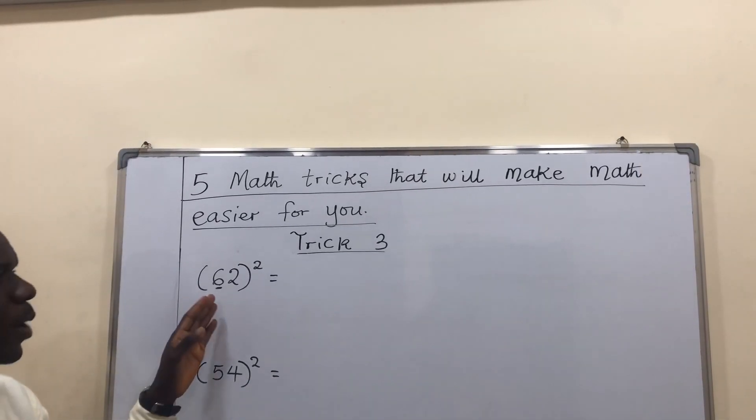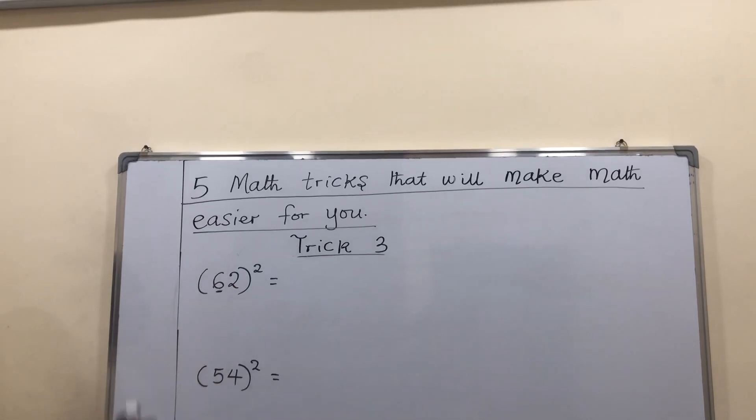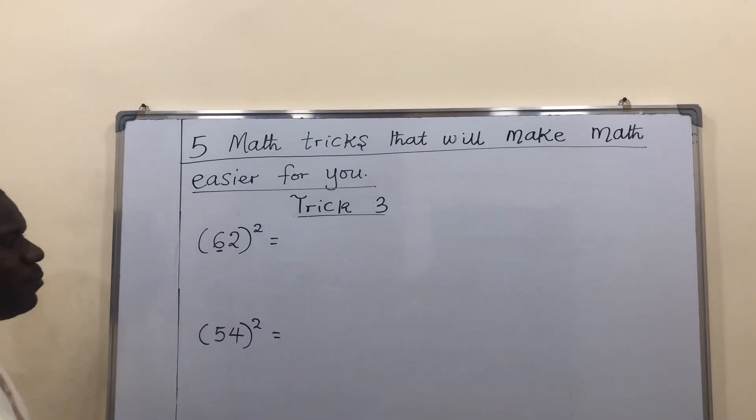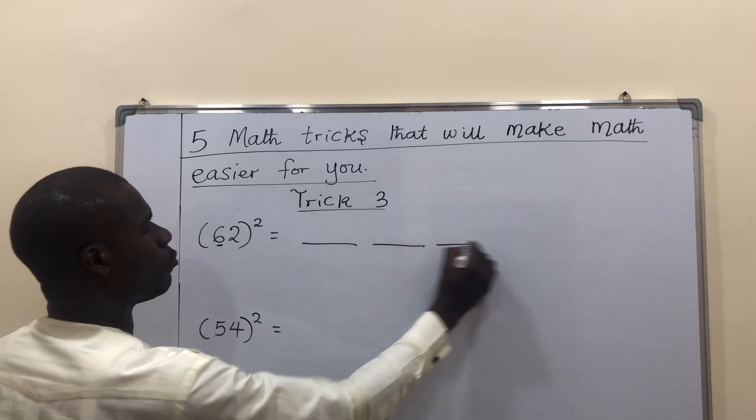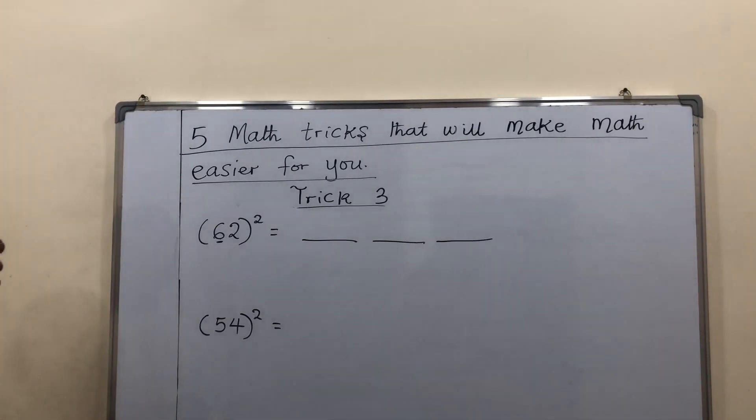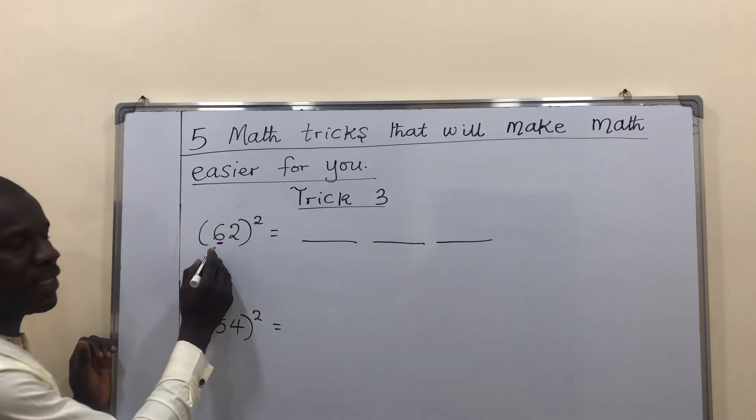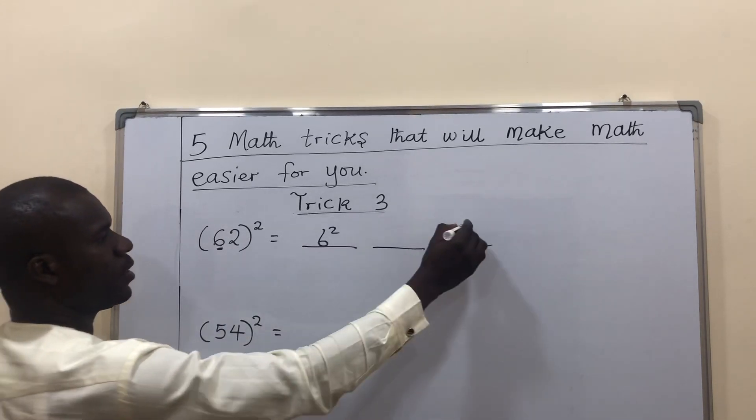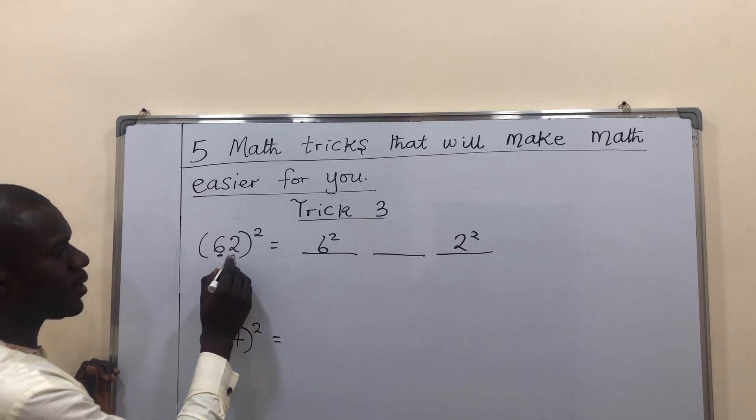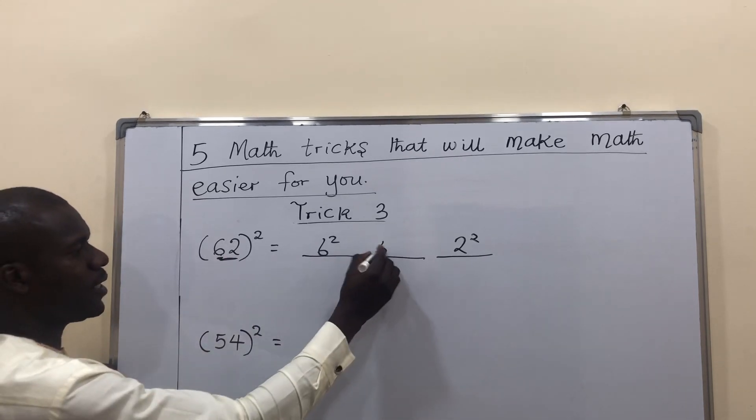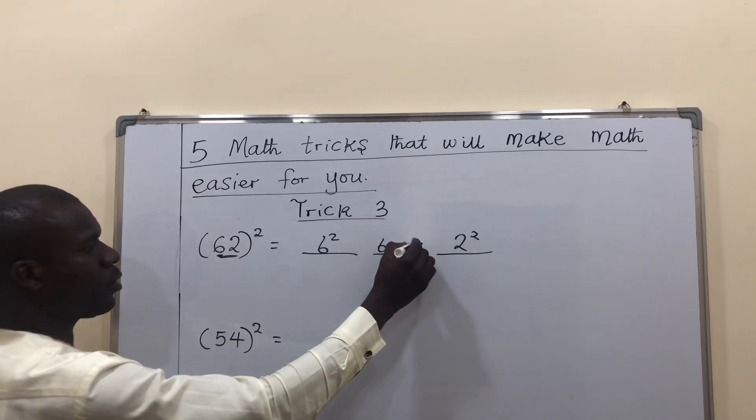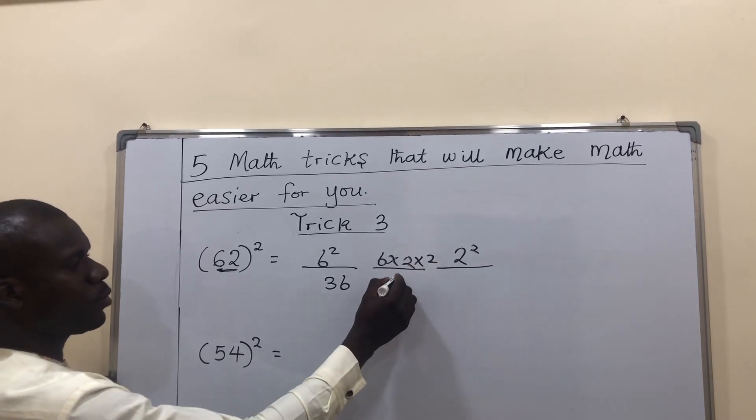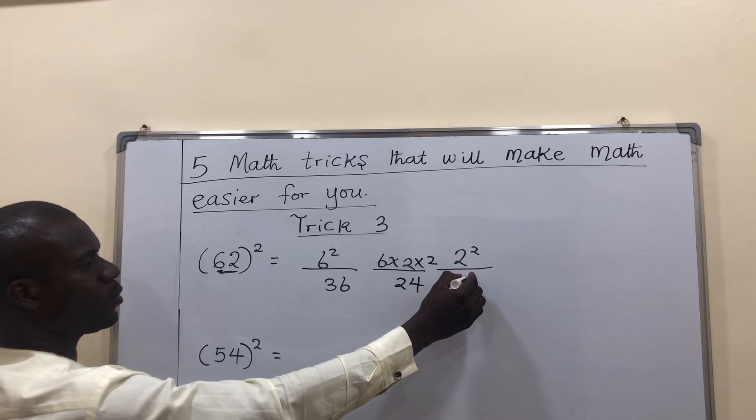Trick 3 has to do with square of any number. If you have a question like this to do, instead of trying to use long multiplication and waste your time, just rule 3 lines. Start from the first digit here, 6. 6 squared. Leave this space. Then, to the extreme end, the second digit, 2 squared. Then, multiply the digits inside the bracket, which is 6 times 2, times 2. 6 squared means 6 times 6, 36. 6 times 2, 12. 12 times 2, 24. 2 squared means 2 times 2, which is 4. That's all.